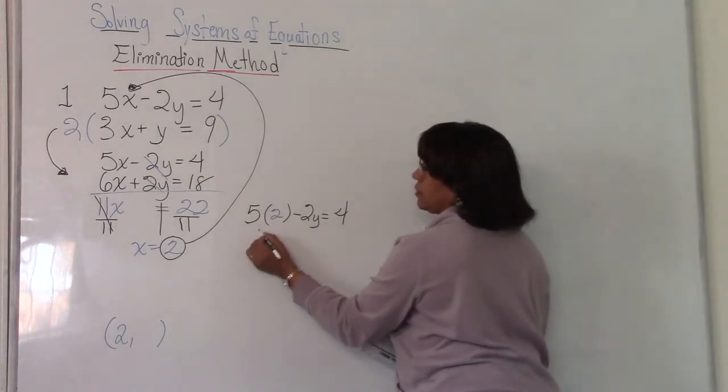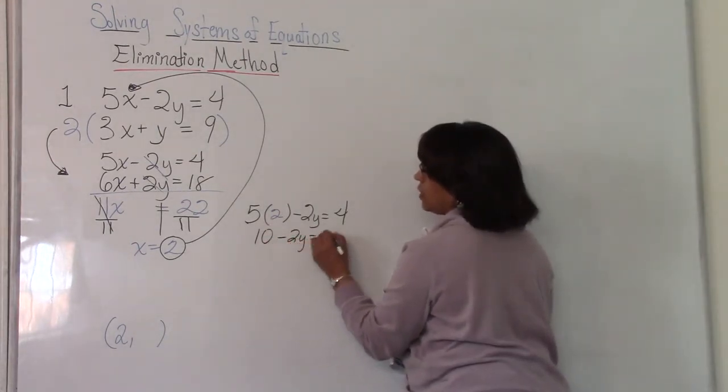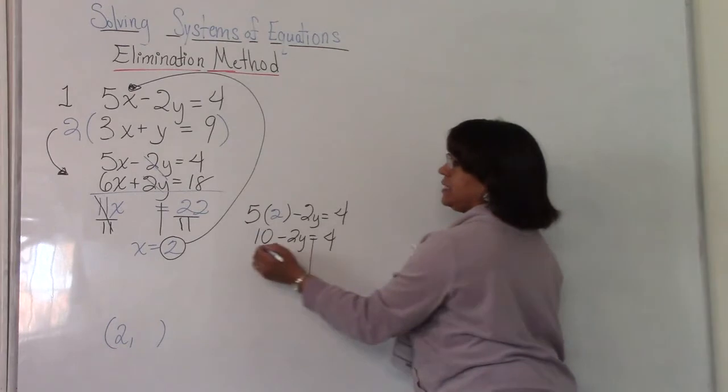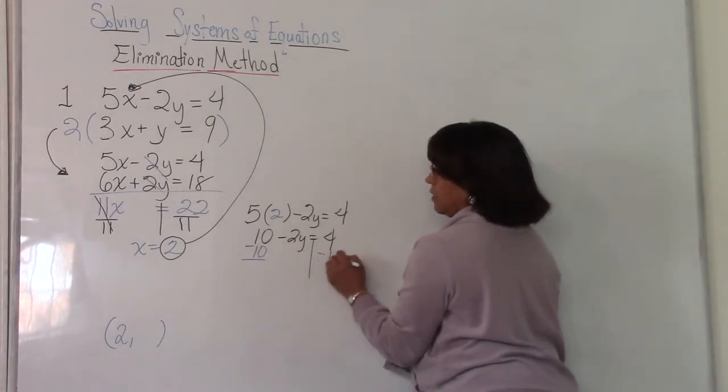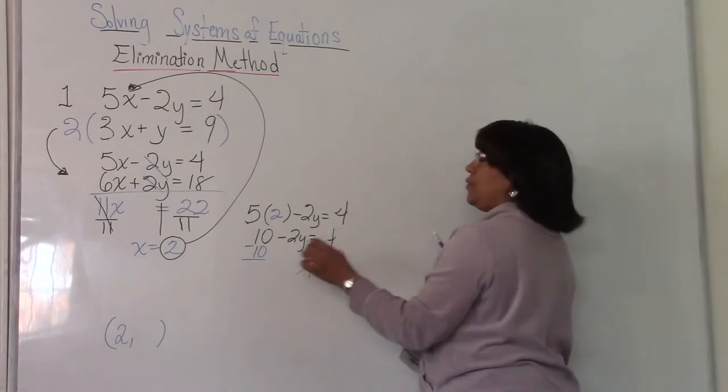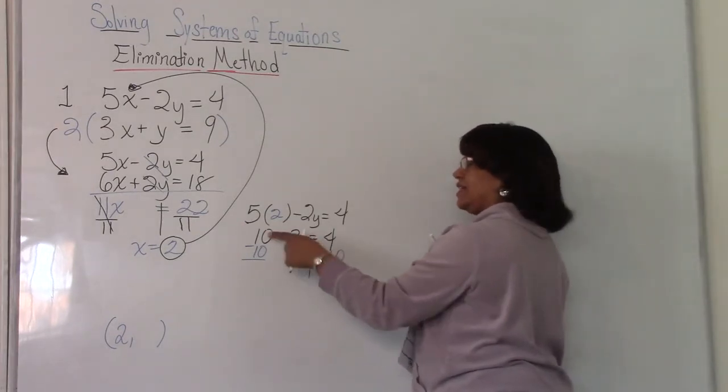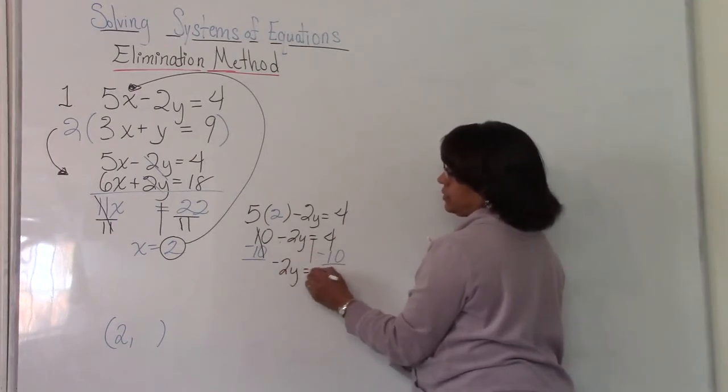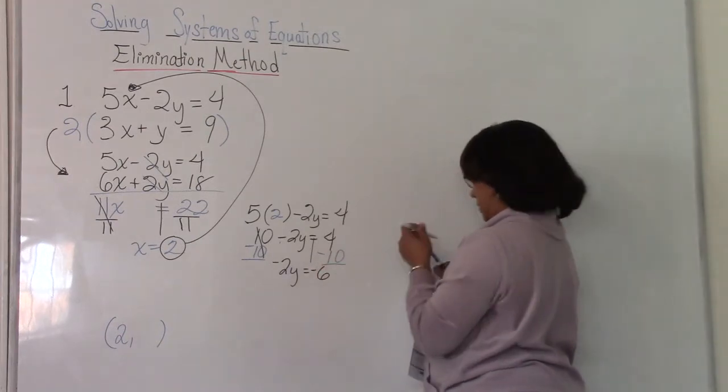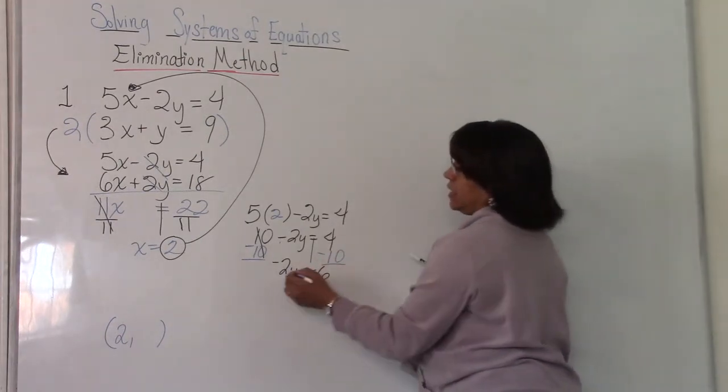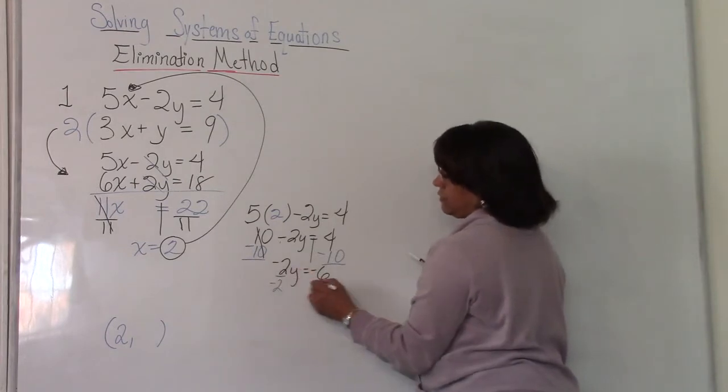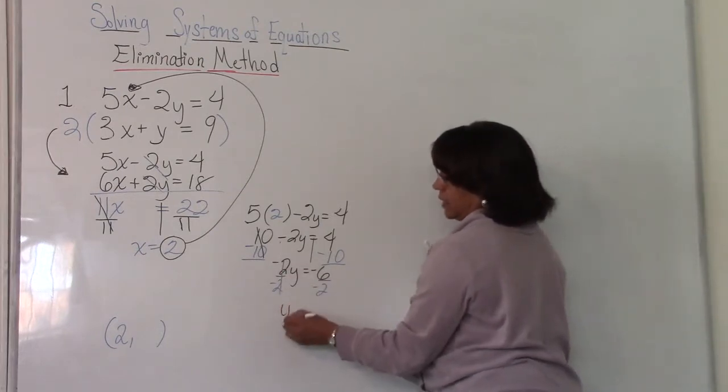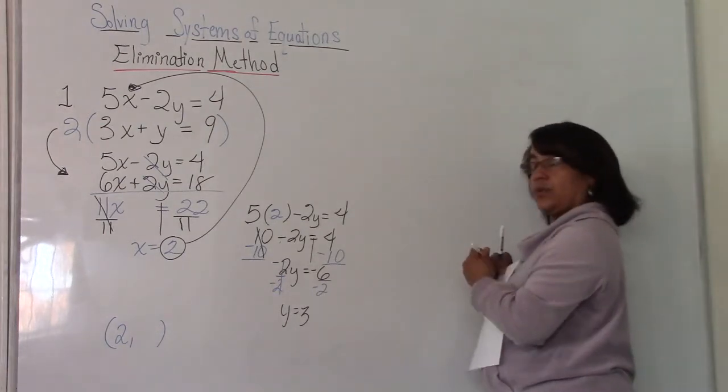Now we solve for y. So we've got to multiply. 5 times 2 is 10 minus 2y equals 4. What would you do here? Right, you want to move that 10 over there with the 4. The opposite of a positive 10 is a negative 10. Remember the minus goes with the 2, not the 10. The 10 is positive. So 10 minus 10 is gone. Don't forget to bring down your negative 2y is equal to 4 minus 10 is negative 6. Subtract and take the sign of 10. Divide both sides by that negative 2 because we want the inverse of multiplication. And we get y is equal to 3. So we're saying that the y coordinate of this ordered pair is 3.